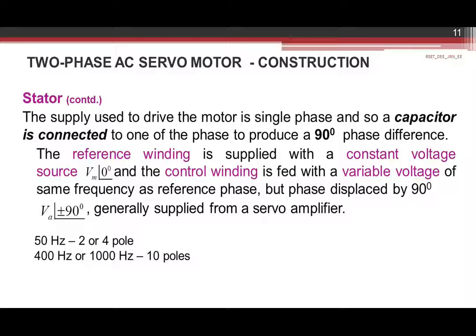The stator has to be fed with a voltage with a phase displacement of 90 degrees. The supply used to drive the motor is single phase, so in order to have 90-degree phase displacement, a capacitor can be connected to one of the phases — generally to the reference winding. The reference winding is supplied with a constant voltage source, represented as Vm∠0°, and the control winding is supplied with a variable voltage of the same frequency but with a phase displacement of 90 degrees: Va∠+90° or Va∠−90°. This is generally supplied by a servo amplifier. For 50 Hz applications, 2-pole or 4-pole motors are used, and for above 400 Hz, 10-pole motors are used.